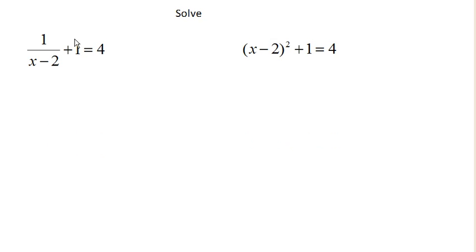So again, we have this plus 1 being added to this larger term. And so we can start by subtracting 1 from both sides, and I get 1 over x minus 2 equals 3.